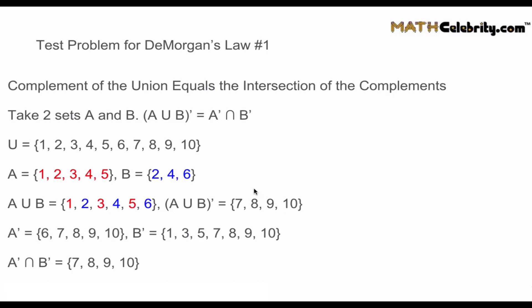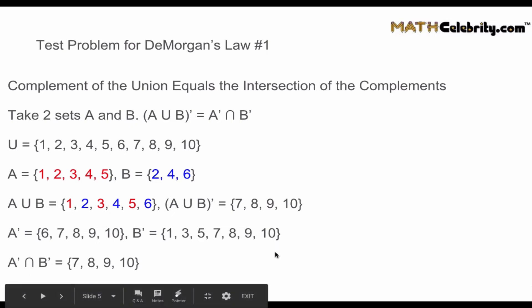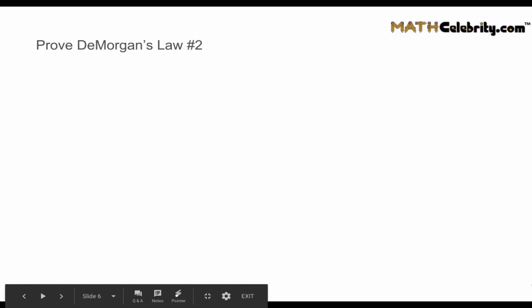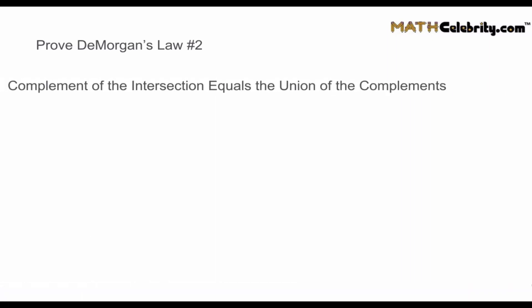So now you've seen a live application of DeMorgan's Law number one. Let's jump ahead and prove DeMorgan's Law number two: the complement of the intersection equals the union of the complements. Let P equal (A intersection B) complement, and let Q equal A complement union B complement.